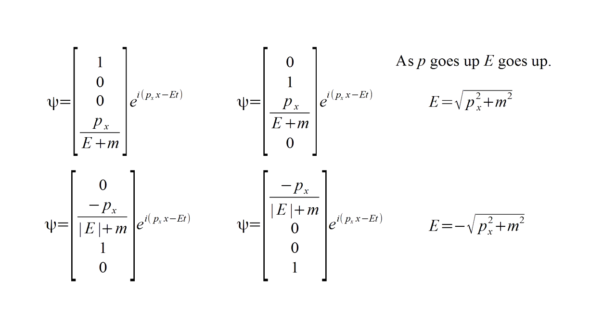Notice that for the positive energy solutions, as momentum increases, energy increases. This is the way we expect physics to work. A free particle is at the lowest possible energy when it's at rest. To make it move requires that an external source of energy impart kinetic energy to the particle. But, for the negative energy solutions, as momentum increases, energy decreases. So it seems that for a negative energy electron to go faster, that is, to accelerate, simply requires it to give off energy.